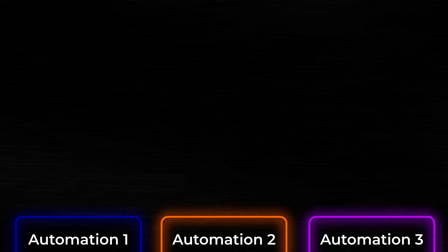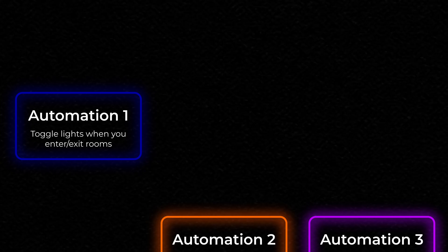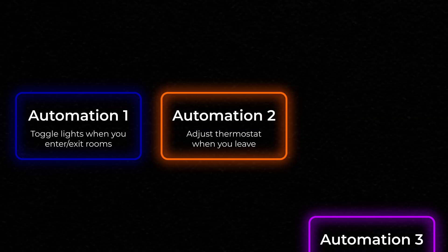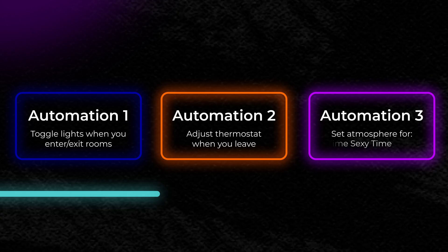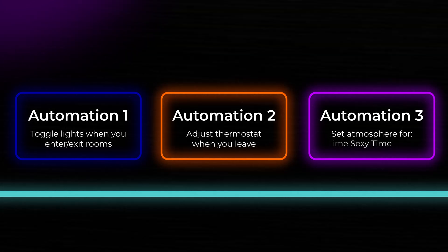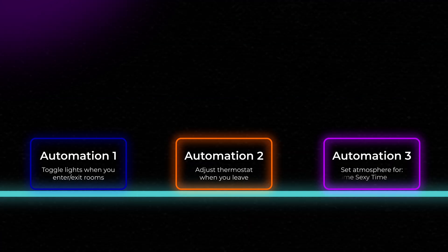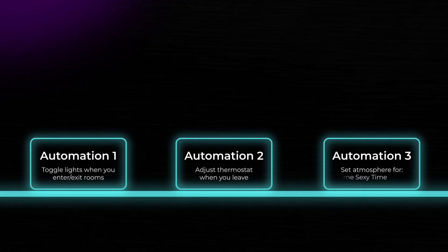In your smart home, you're going to have a lot of individual automations — one that toggles lights when you enter and exit rooms, one that adjusts the thermostat when you leave, or one that sets the atmosphere for bedtime, movie time, or sexy time when you press a button. When you add AI into the mix, you have the option of adding all of these individual automations into the AI's tool belt, giving it the power to trigger them autonomously. So instead of pressing a button for movie time, you can say something like 'we're going to watch Netflix and chill in about 10 minutes' and 10 minutes later it will activate movie time.